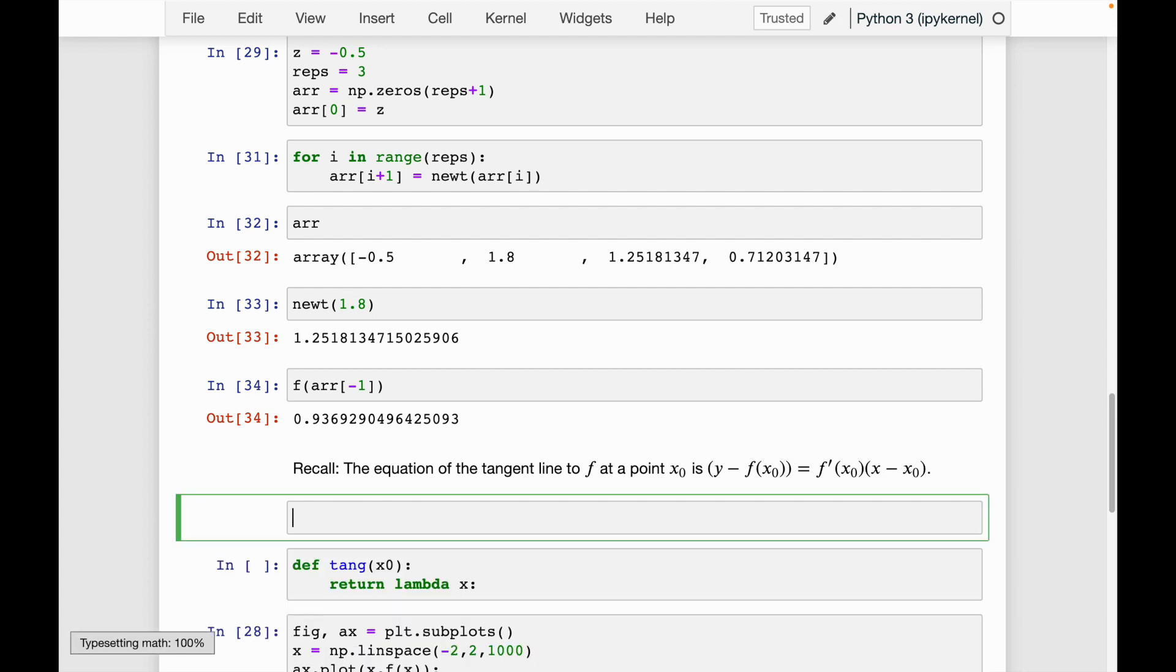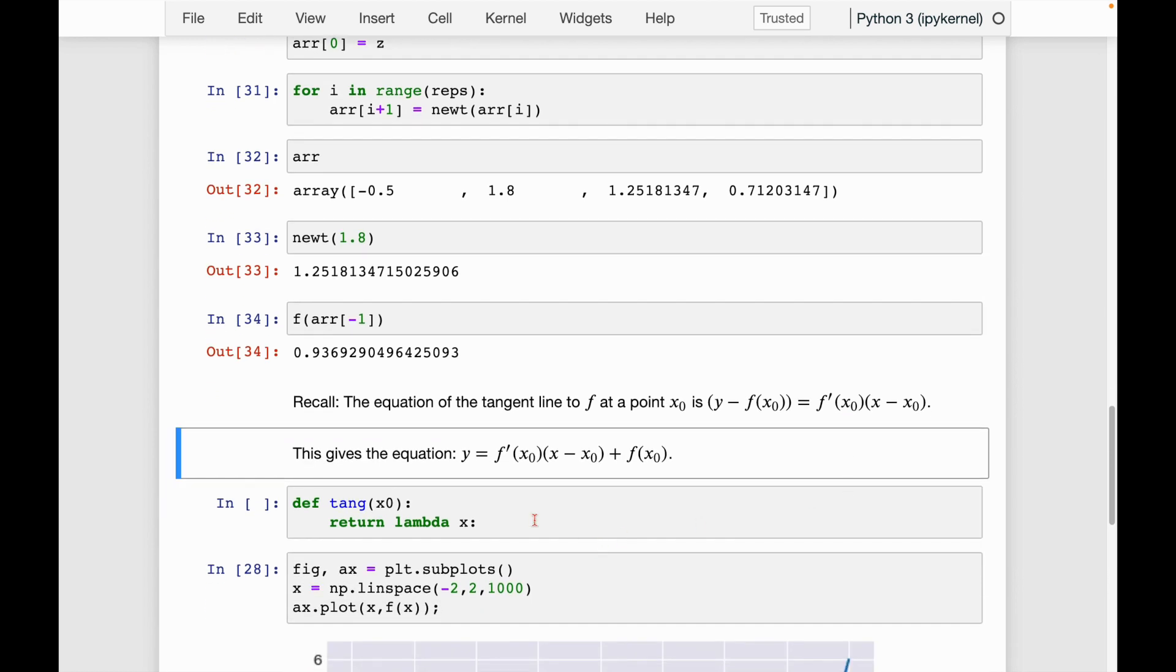So then if we were to just rearrange this so that it's y equals and then a function of x, what we would get, so this gives the equation, so we have y equals f prime of x naught times x minus x naught plus f of x naught. Let me add a period at the end.